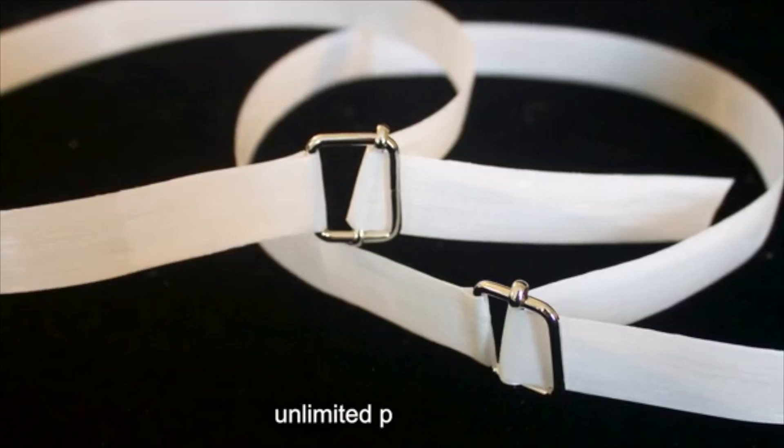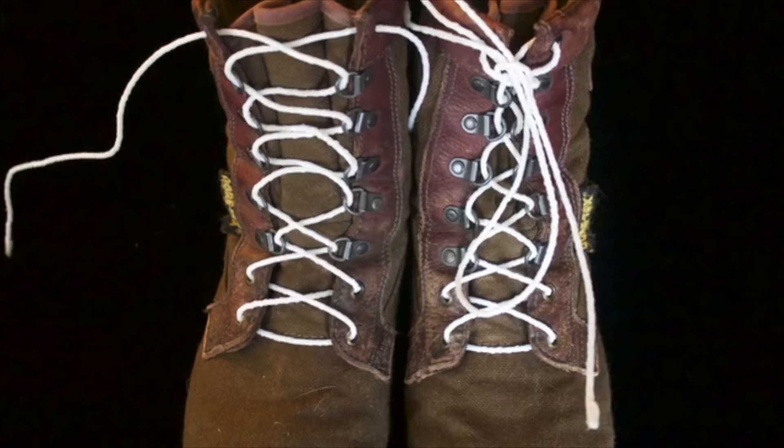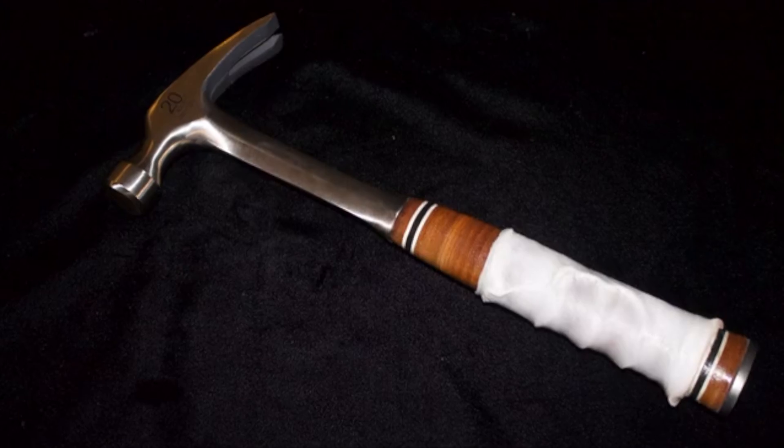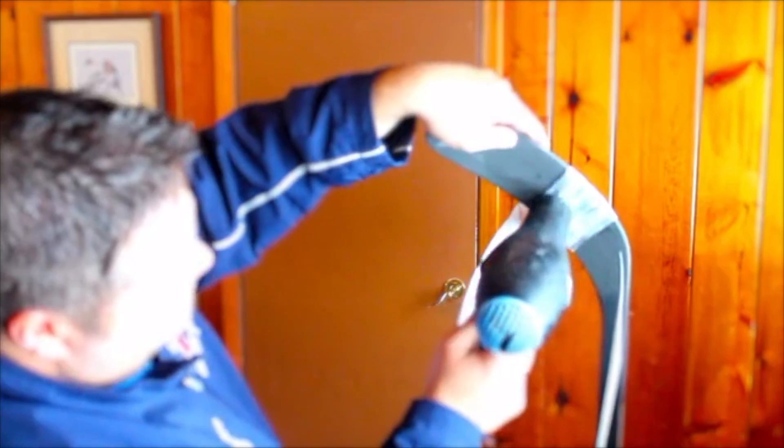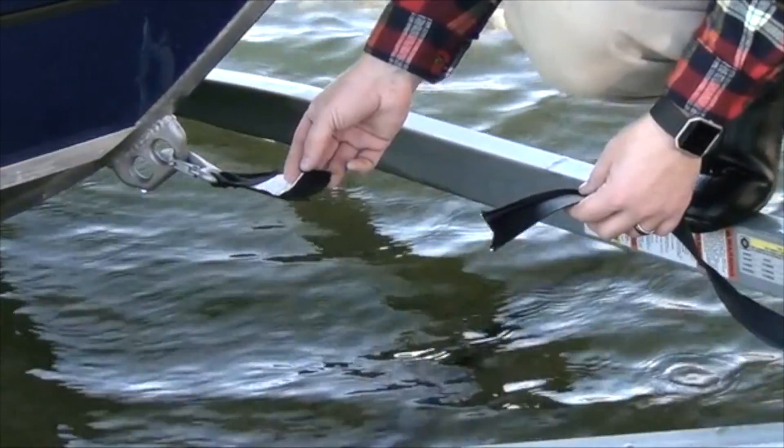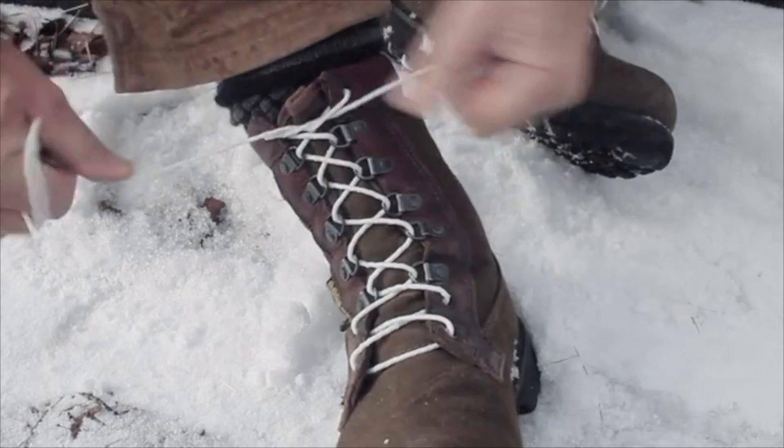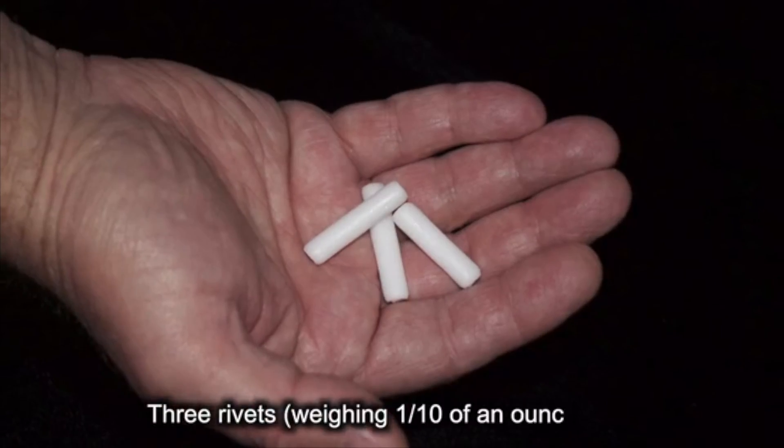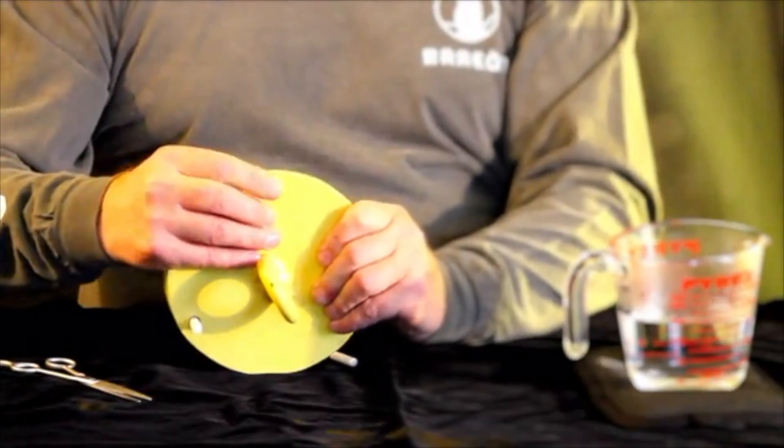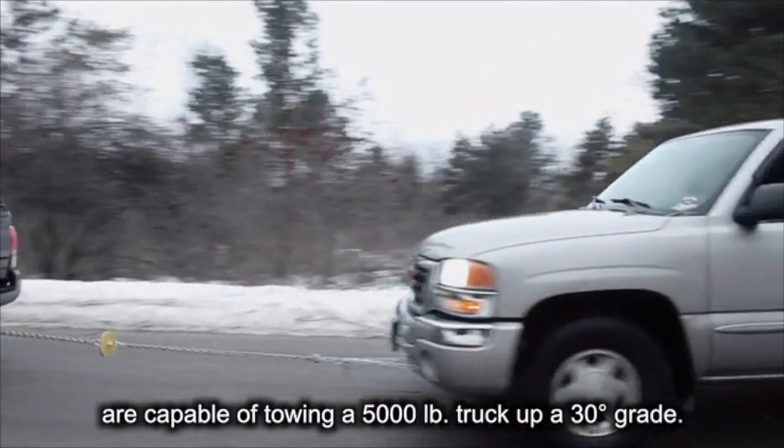Unlimited possibilities. Three rivets weighing one tenth of an ounce total are capable of towing a 5,000 pound truck up a 30 degree grade.